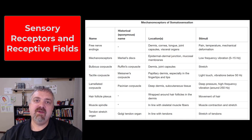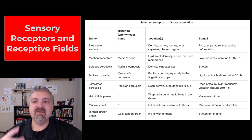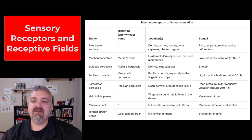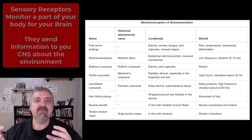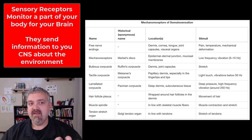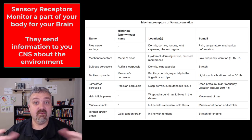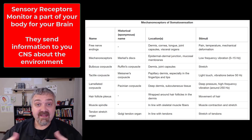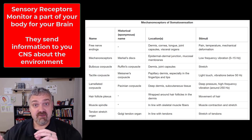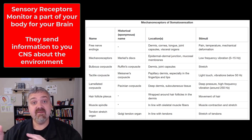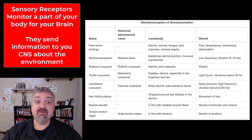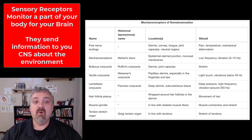Hey everybody, Dr. O here. In this video, I'm going to introduce some of the different sensory receptors, but I really want to focus on receptive fields. Sensory receptors are anything that can detect an arriving stimulus — they translate it into an action potential and send that information on to your central nervous system so you can respond to it, either consciously or subconsciously.